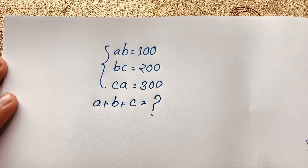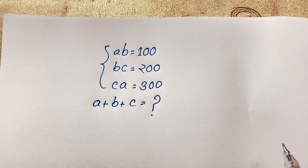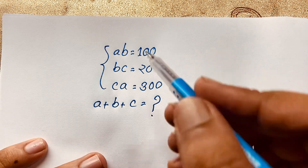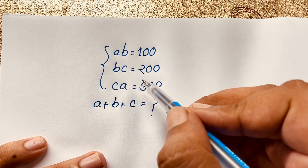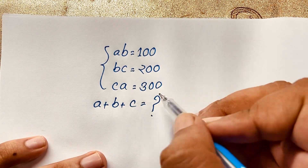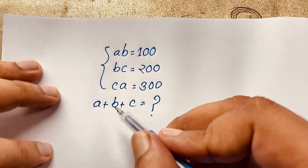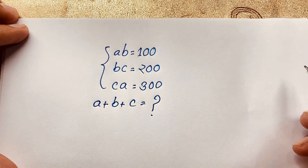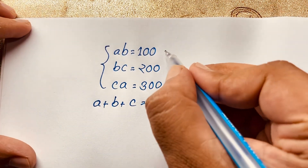Hello everyone, welcome to Rasha's classroom. Today we have solved an interesting math question: AB is equal to 100, BC is equal to 200, and CA is equal to 300. A plus B plus C is equal to what? How to solve this interesting math question?